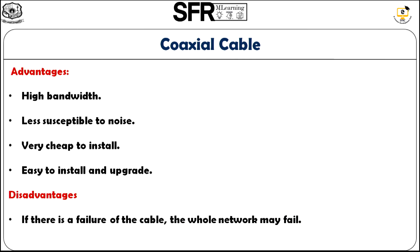Regarding advantages, coaxial cable has high bandwidth and is less prone to noise. It is very cheap to install — that is why it is used in cable TV networks — and it is easy to install and upgrade. The disadvantage is that if there is a cable failure, the whole network may be disrupted.